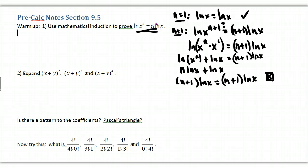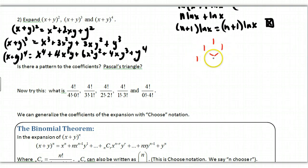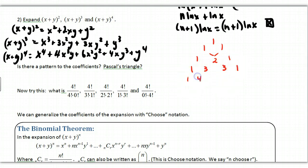Once you expand a couple of binomials, you'll notice a pattern with the coefficients — Pascal's triangle. If I continue the triangle, I take the sum of two adjacent numbers and write it below. To get the next row, start with 1, add the two numbers above each position, and end with 1. That gives 1, 4, 6, 4, 1. You can Google Pascal's triangle for many more rows.